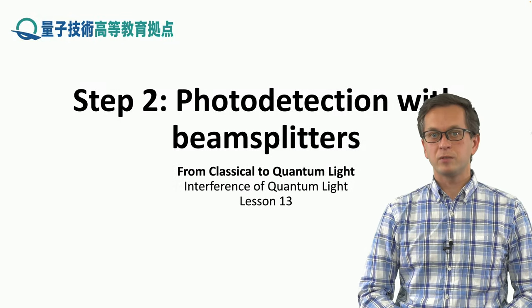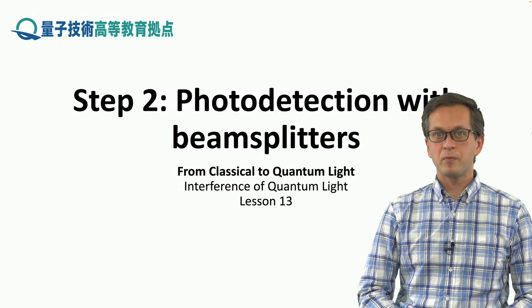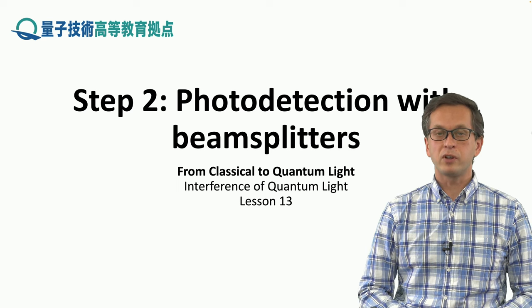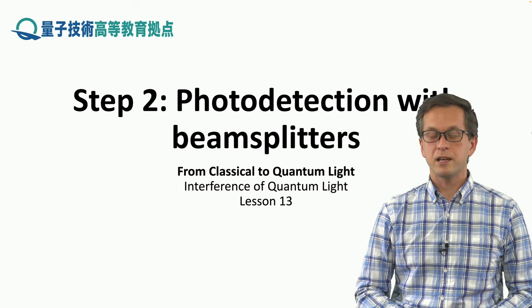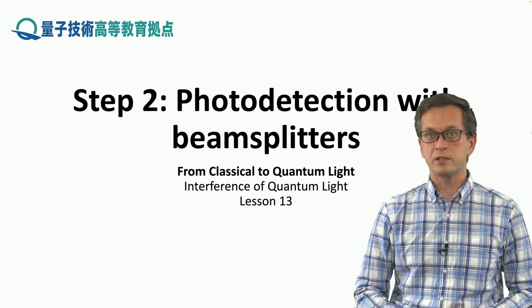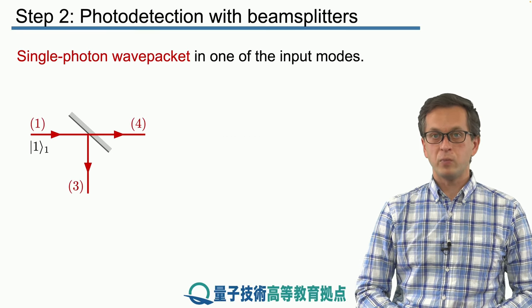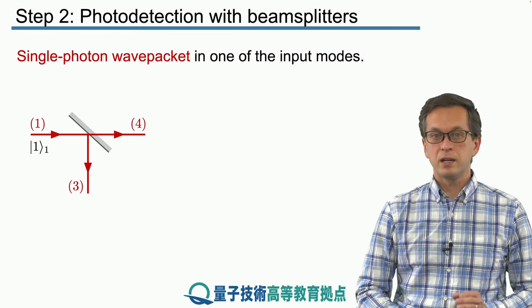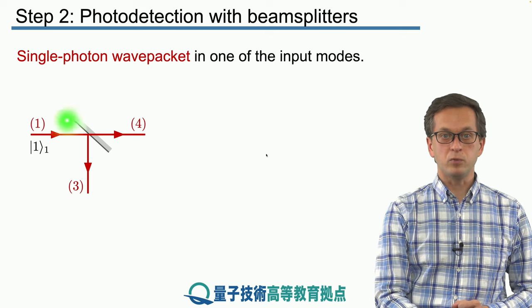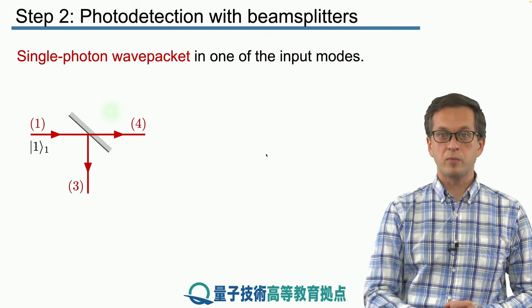Step 2: photodetection with beam splitters. In this step we're going to consider the problem of calculating the photodetection signals at the output modes 3 and 4 of a single beam splitter. To make things simple, we're going to consider a single photon in output 1, so there is nothing coming from output 2.